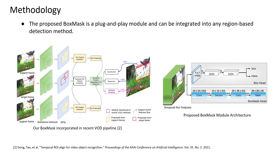The figure on the right presents the overall architecture of the detection phase with a box mask head, in which a single fully convolutional network is added to predict the mask of a bounding box. Thanks to its simplistic design, the proposed box mask head can be integrated into any region-based video object detection method.